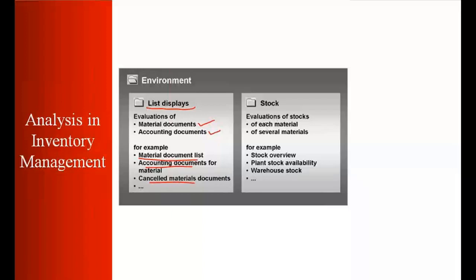The second category of reporting is stock, where you can view stock depending on different criteria. For example, you can see stock for an individual material, or have a report for multiple materials within a plant, or view stock for a plant, a storage location, or a warehouse.